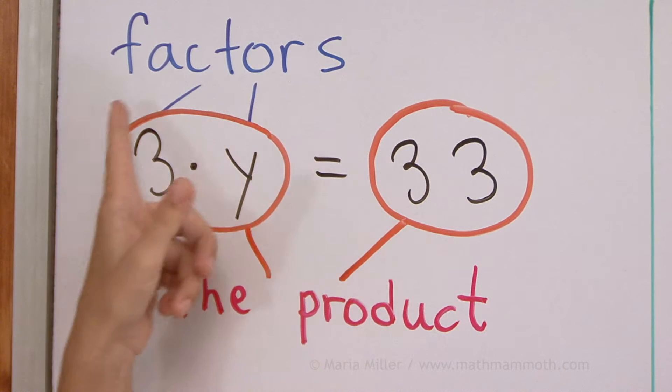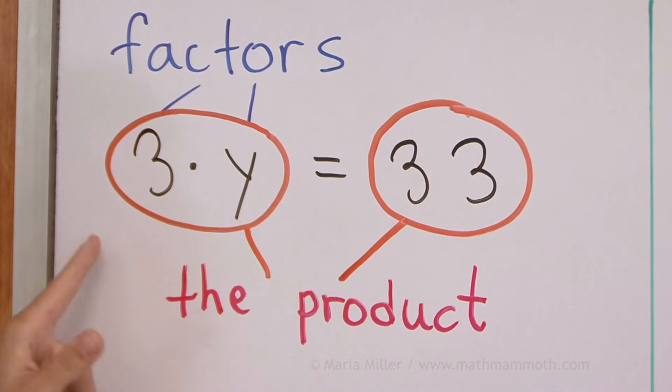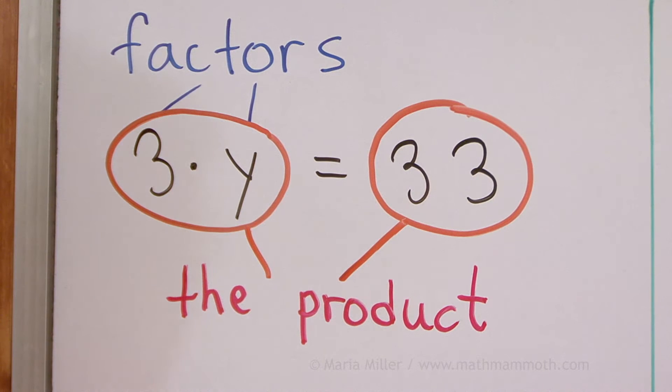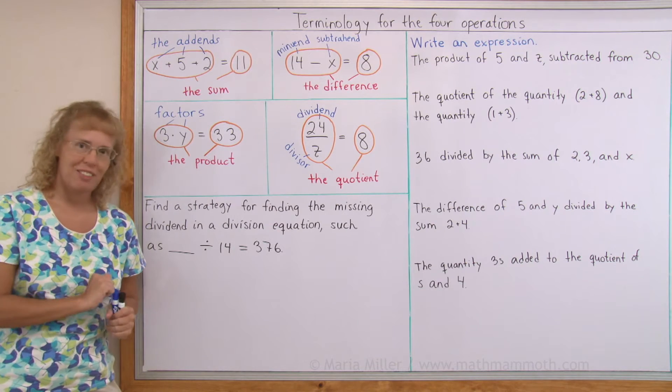Or the multiplication expression is called the product. This particular one is the product of 3 and y. Or the product of 4 and 7 would be 4 times 7.